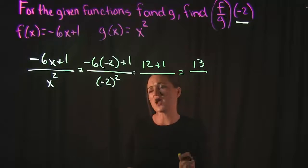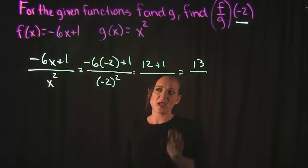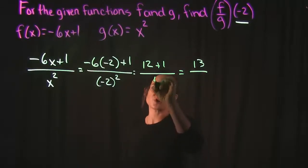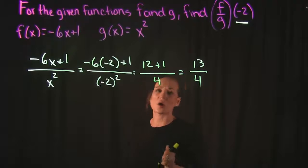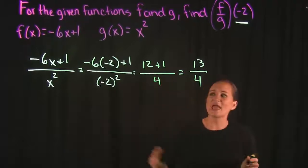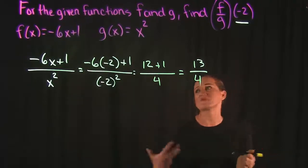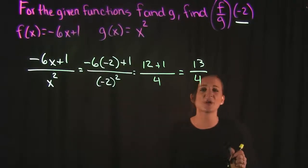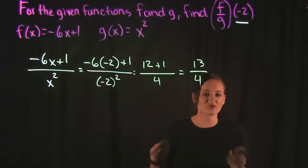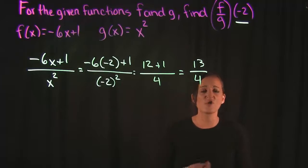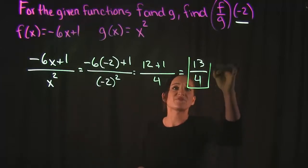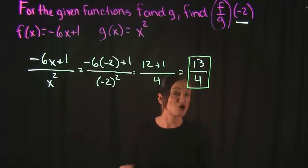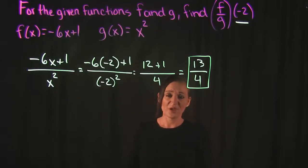In our denominator, negative 2 squared — negative 2 times 2 is 4. So after simplifying the numerator and the denominator, we get 13 over 4, which does not simplify, so our final answer is 13 over 4.